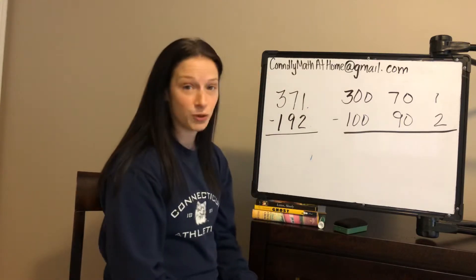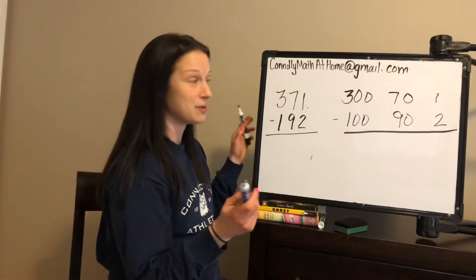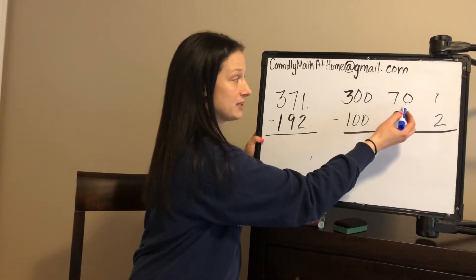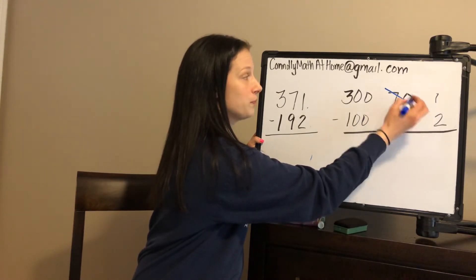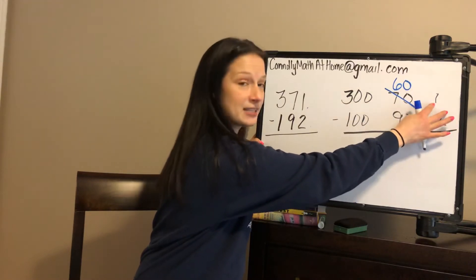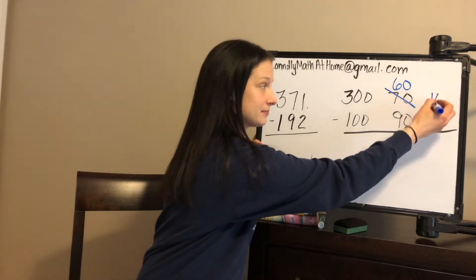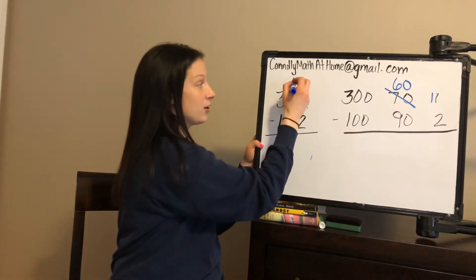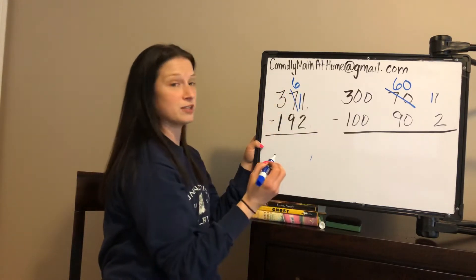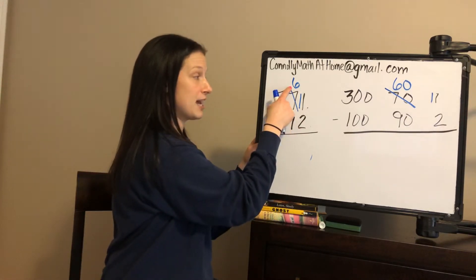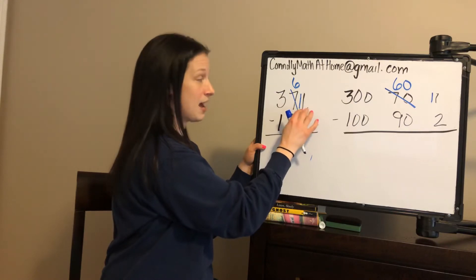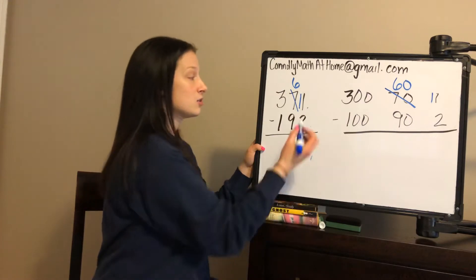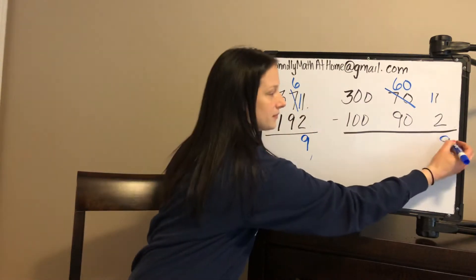So we cannot do 1 minus 2, so here's what has to happen: we have to regroup. It's called regrouping now, not borrowing. So what we're going to have to do is regroup from the 10s place. I'm going to take a group of 10 and add it to the 1s place. So 1 plus 10 is 11. I took that group of 10 and added it to the 1s place. So I used to have 7 groups of 10, now I have 6 groups of 10. And I used to have 1, and now I have 11 ones. So 60 plus 11 is still 71 — I'm just regrouping so that I can subtract. So 11 minus 2 we're able to do now.